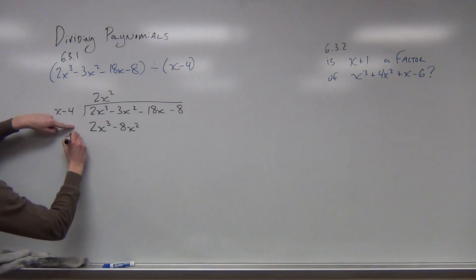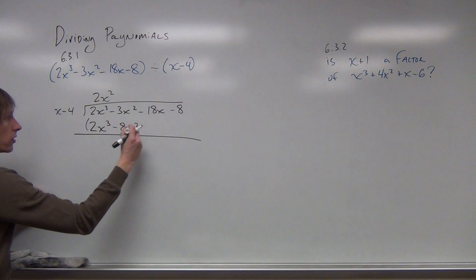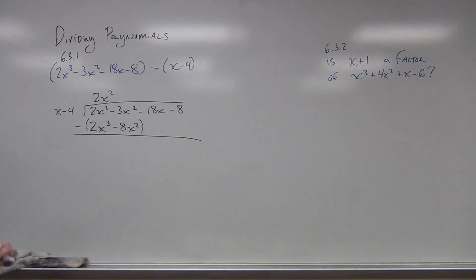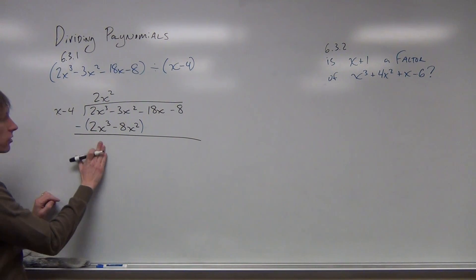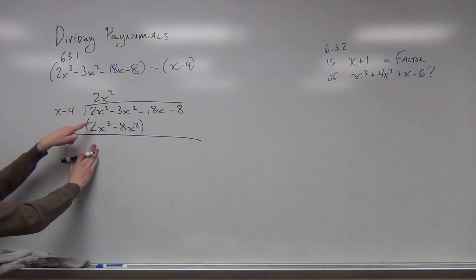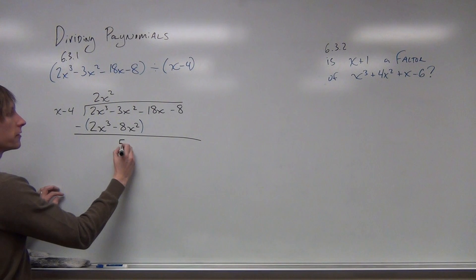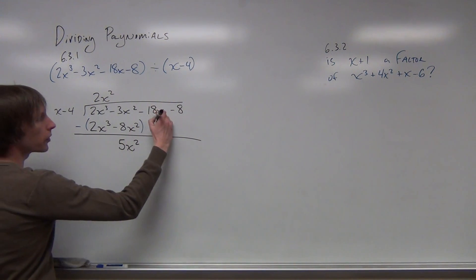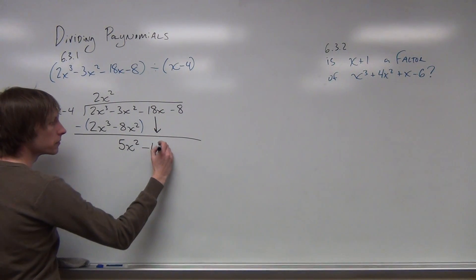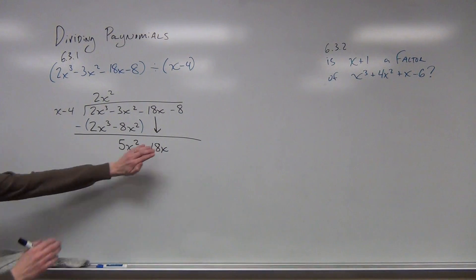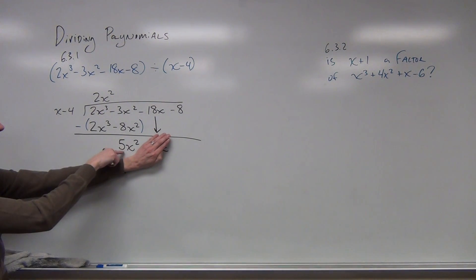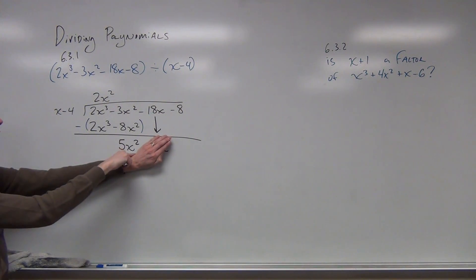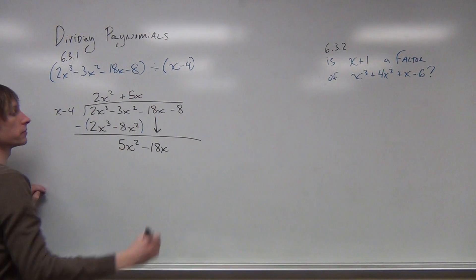What we do is take this and subtract. That stuff in blue, you might not need to write as long as you understand that you're subtracting. 2x cubed minus 2x cubed makes 0. Negative 3x squared minus negative 8x squared makes a positive 5x squared. The next part — it might vary from exercise to exercise — but what we would do is bring down this term here. We're still asking how many times does x go into 5x squared, or what is 5x squared divided by x? We're going to say that is 5x.